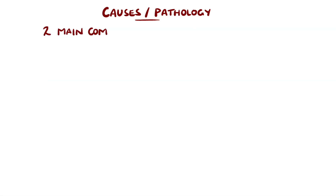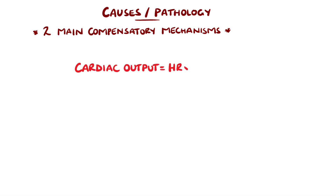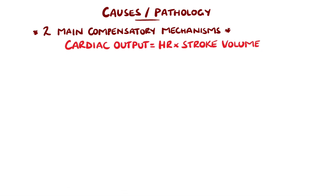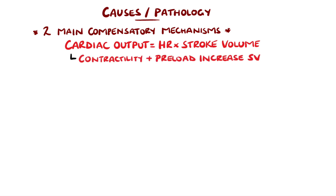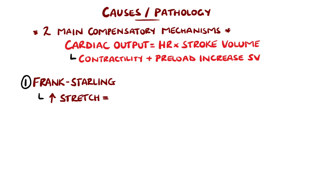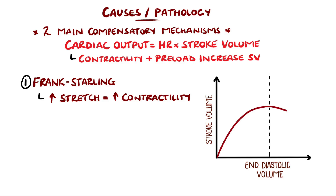There are two main compensatory mechanisms that occur in response to the pathology. This can be better visualised with the cardiac output formula, which is given by stroke volume multiplied by the heart rate. To maintain the cardiac output, the body compensates by attempting to either increase the heart rate or the stroke volume by increasing contractility or preload. The first mechanism is the Frank-Starling law, which states that contractility increases as the stretching of the ventricle increases, measured often as stroke volume compared to end-diastolic volumes, known as preload.